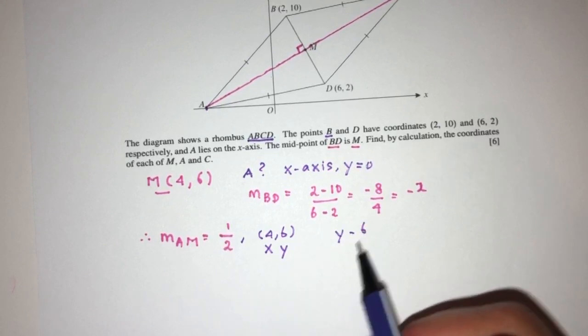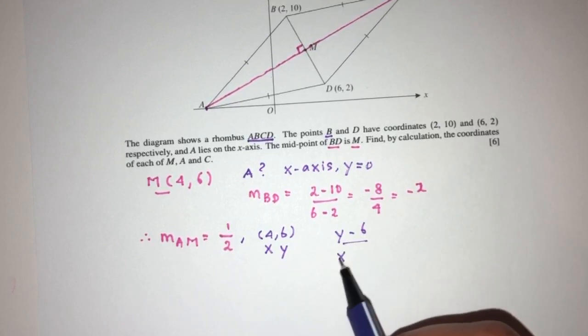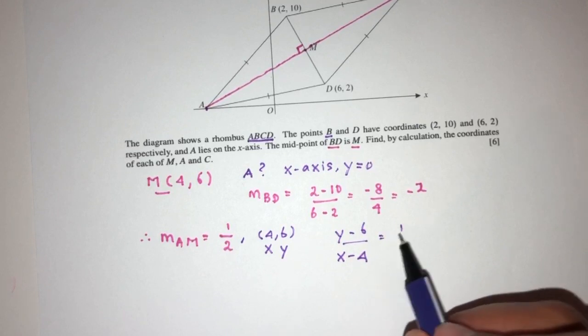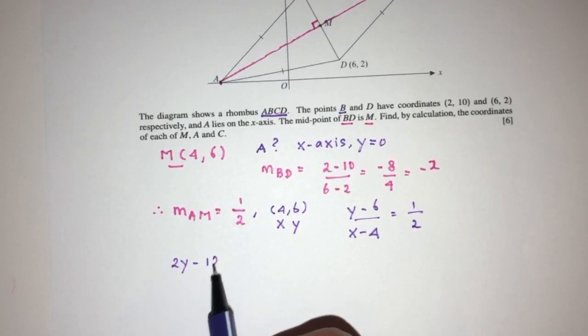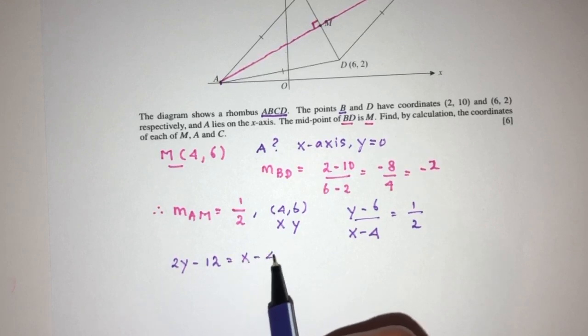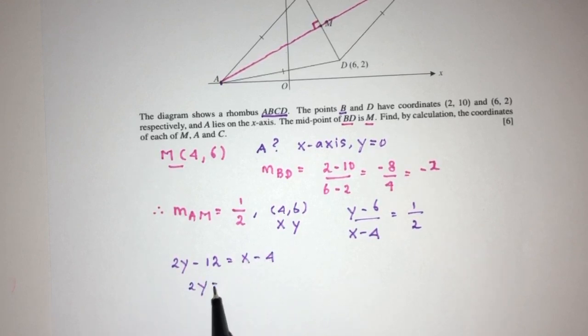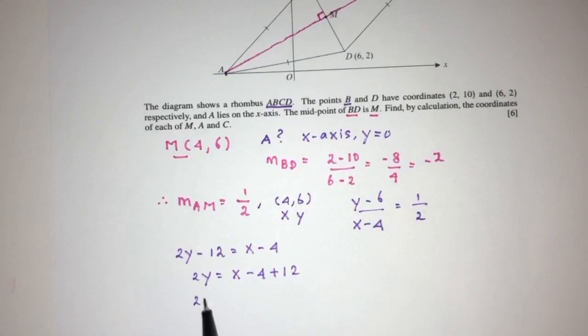That will be Y minus 6 over X minus 4 equals half. Cross multiply, you will have 2Y minus 12 equals X minus 4. 2Y equals X minus 4 plus 12. So you have 2Y equals X plus 8. So this will be the equation of A, M.